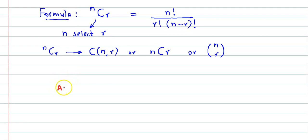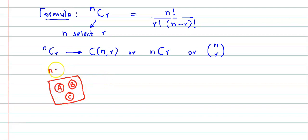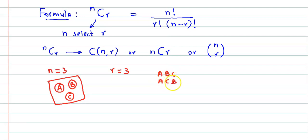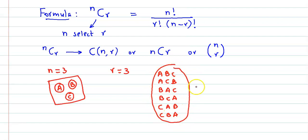Suppose we have three objects: a, b, and c, so n equals three. And we have to select all three objects. Now whether you select them in order a, b, c or a, c, b or b, a, c or b, c, a or c, a, b or c, b, a — all these selections will be considered one and the same, because every one contains a, b, and c. So order does not matter here, and the number of selections is one.